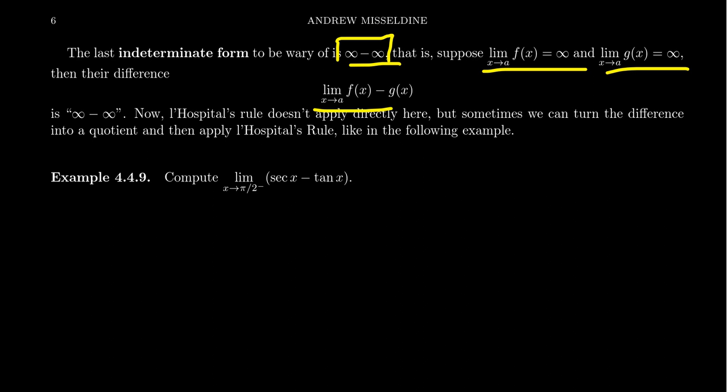We have to somehow convert it into a quotient. And that's basically the strategy. If you have infinity minus infinity, you have to somehow turn your difference into a quotient. And that depends on the nature of the function.